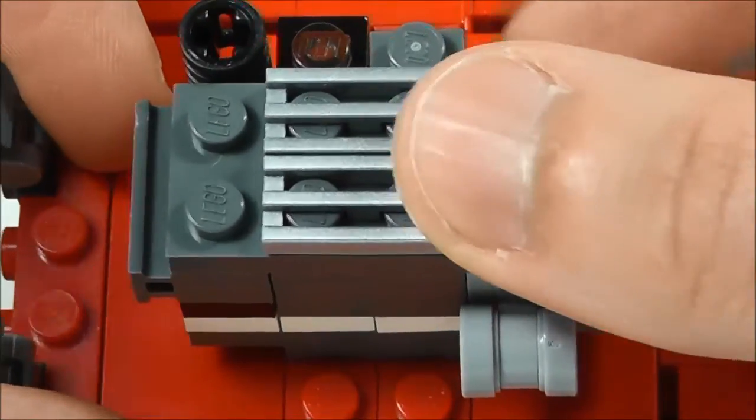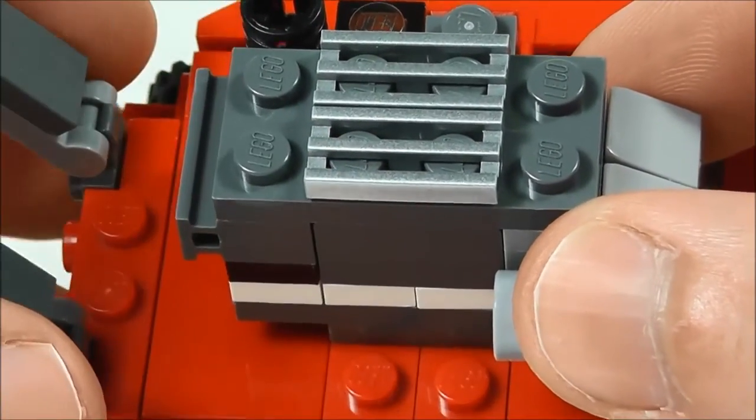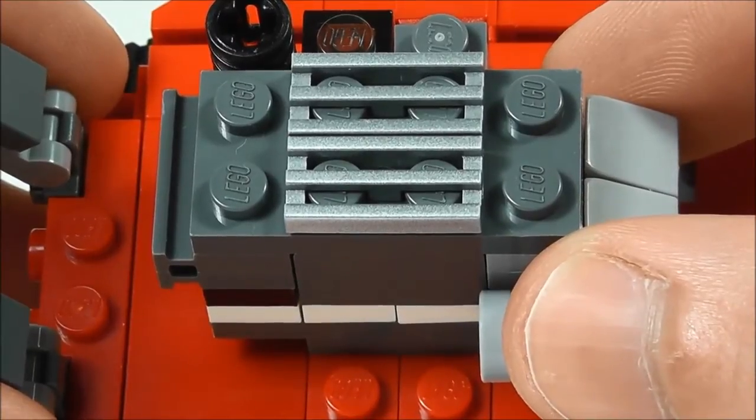And then the top, this is where you look down through and that's what spins in there to get the engine going. And there usually be a pull string here, which unfortunately I couldn't build using the pieces that I had from the set.